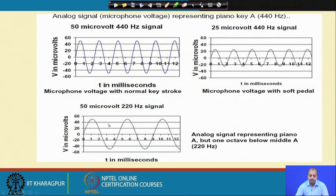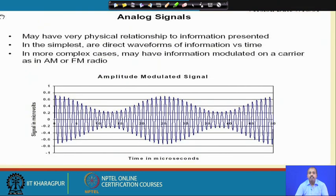Analog signals have a very physical relationship to the information presented — the direct signal is information versus time, giving us information at different time instants. But normally, analog signals are never transmitted or processed directly. We convert them into some other form, which is known as modulation.